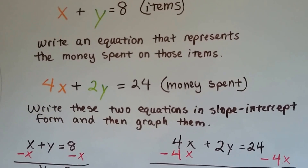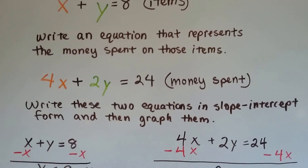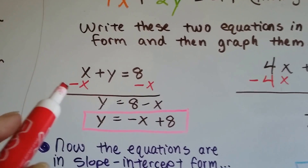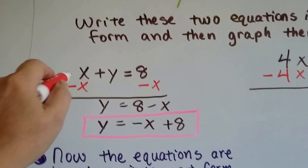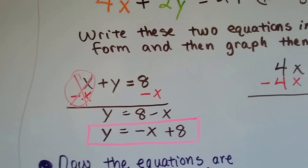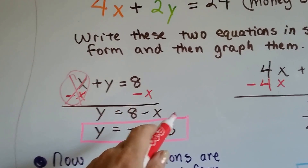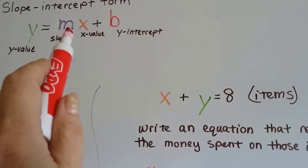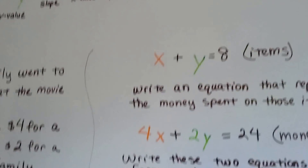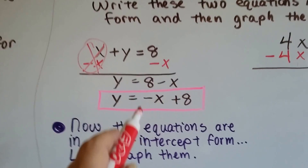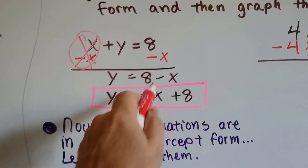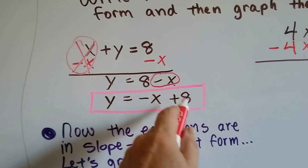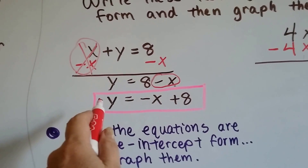We need to write these two equations in slope-intercept form and then graph them. For the first equation, we subtract x from both sides — that creates a zero pair and cancels out. Now we've got y equals 8 minus x. The x needs to be on this side and the 8 on that side to be in slope-intercept form. The x is right next to the slope and the equal sign, and this 8 is the y-intercept. So we bring minus x forward and positive 8 back — now our equation is in slope-intercept form.